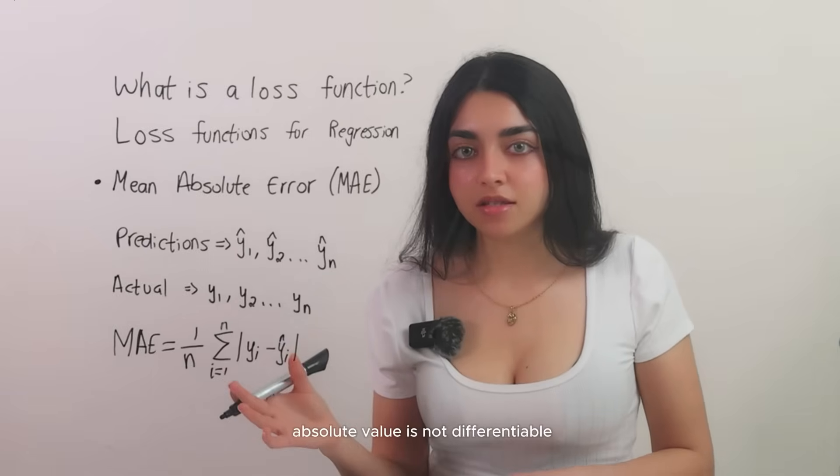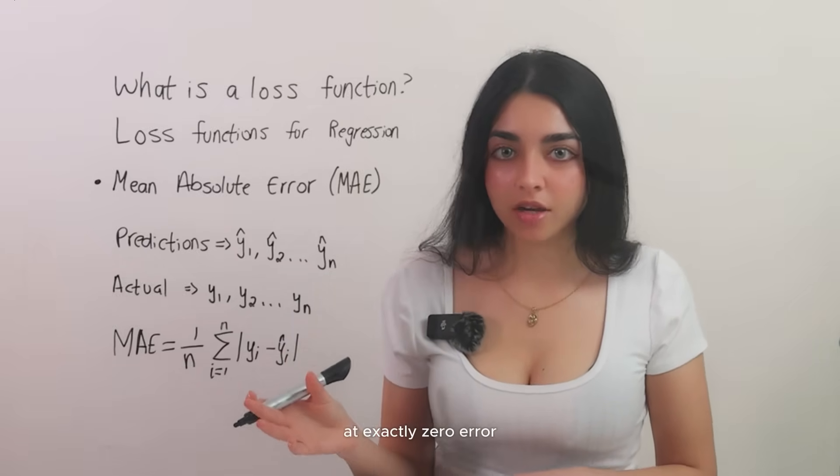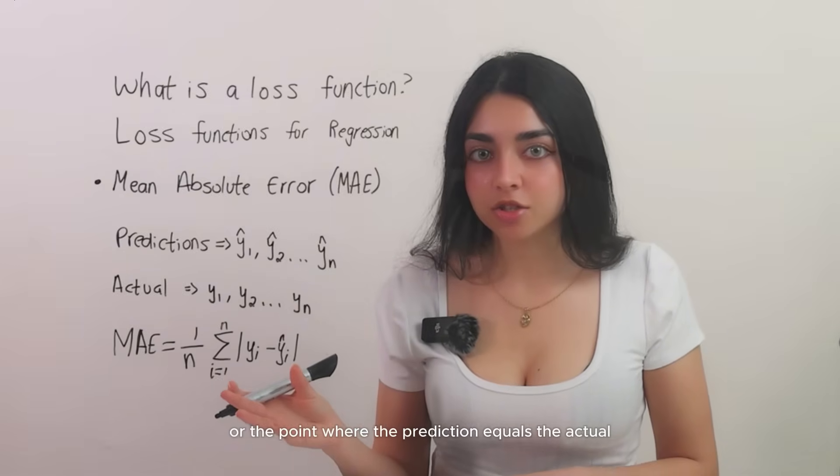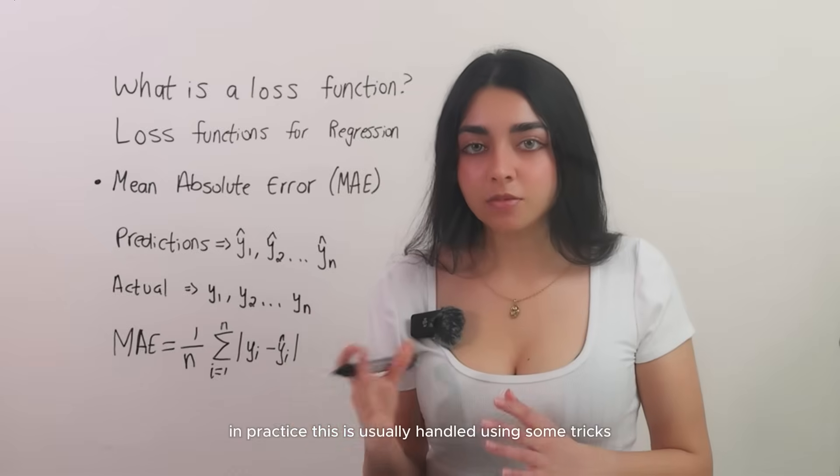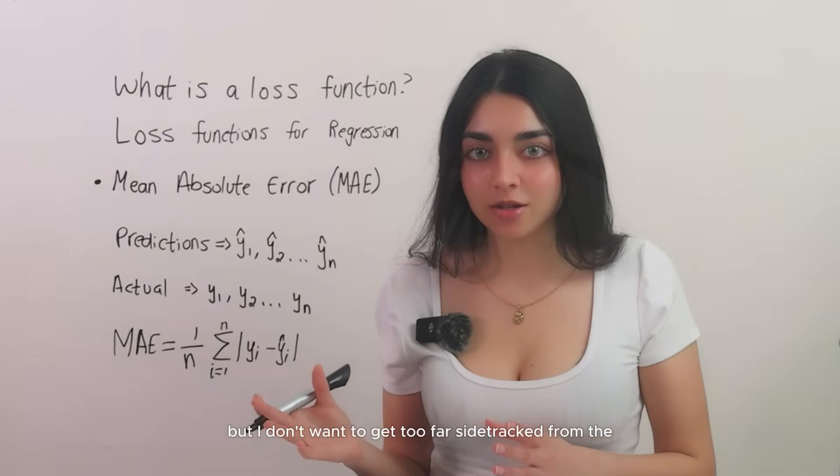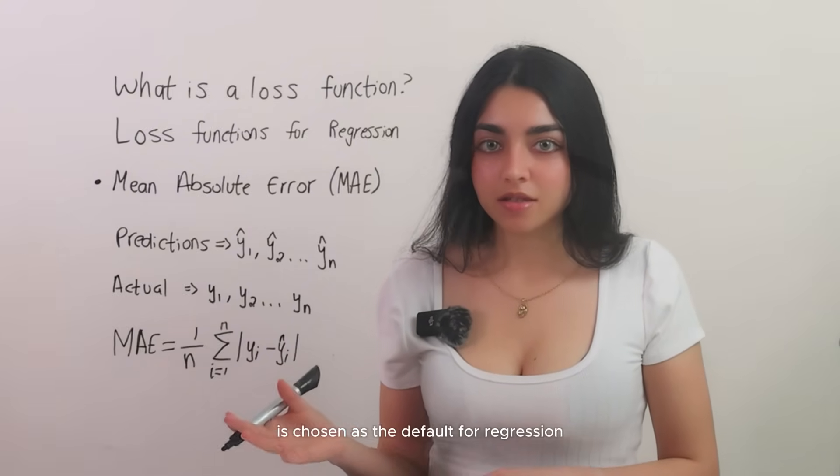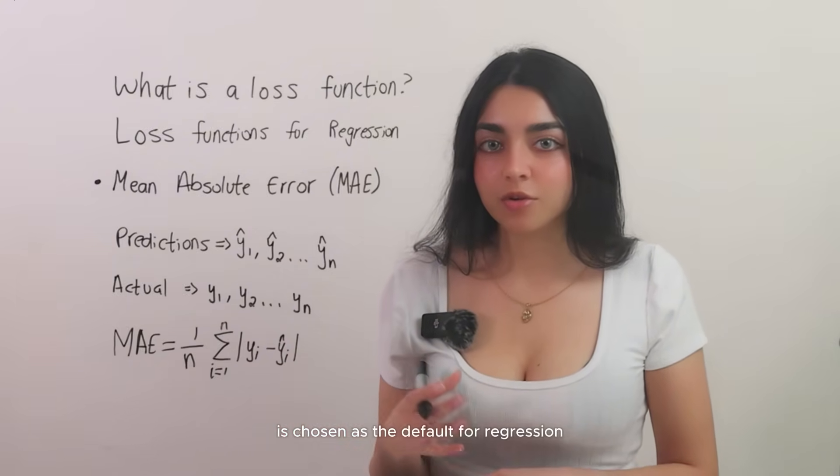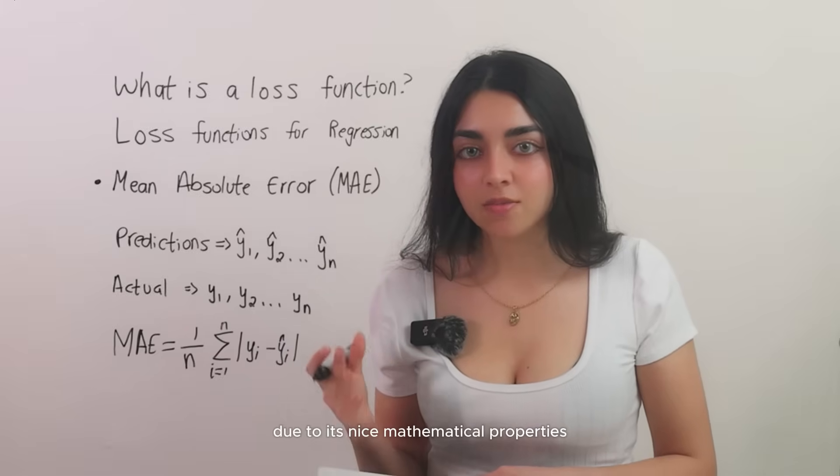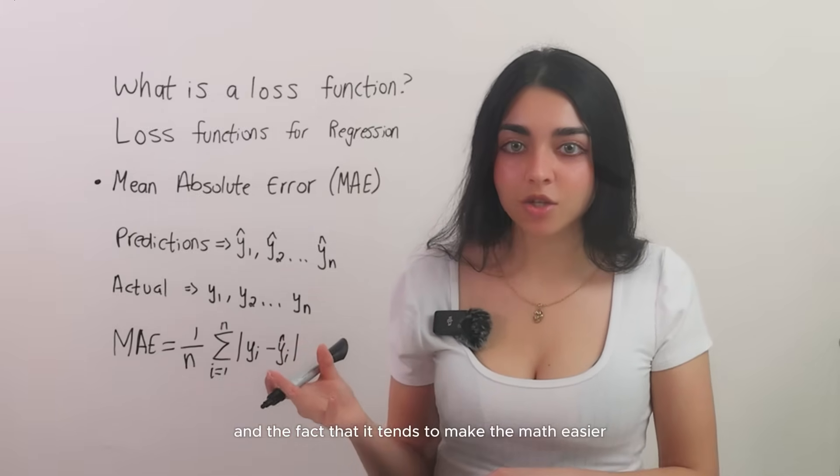However, MAE's absolute value is not differentiable at exactly zero error, or the point where the prediction equals the actual. In practice, this is usually handled using some tricks, but I don't want to get too far sidetracked from the point of this video. In many cases, MSE is chosen as the default for regression due to its nice mathematical properties and the fact that it tends to make the math easier for optimization.